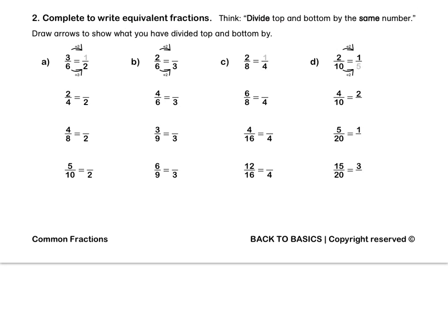Let's look at A. 6 divided by 3 is 2, and 3 divided by 3 is 1. Let's look at B. 6 divided by 2 is 3, and 2 divided by 2 is 1. Directly beneath it, 6 divided by 2 is 3 and 4 divided by 2 is 2.